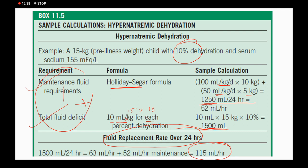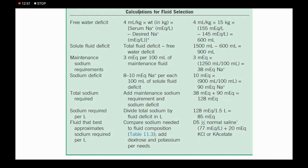Next, we determine which fluid to give. With sodium of 190, we cannot give NS (sodium 154). Free water deficit = 4 ml/kg × 15 × 10 = 600 ml. The desired sodium correction is typically 10 mEq in 24 hours; in our hospital we use 10, but 8 may be used per unit policy. Solute fluid deficit = total fluid deficit minus free water deficit = 1500 minus 600 = 900 ml.